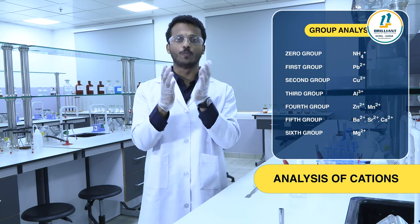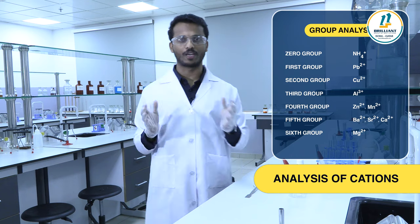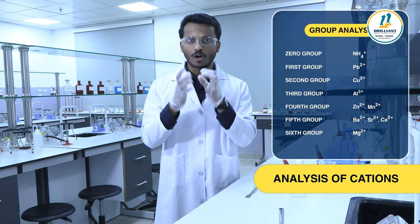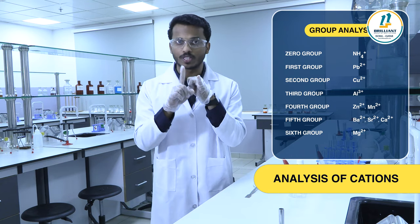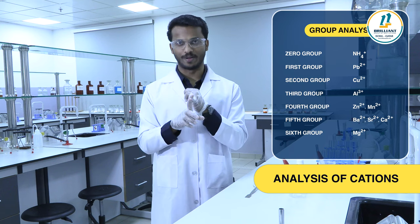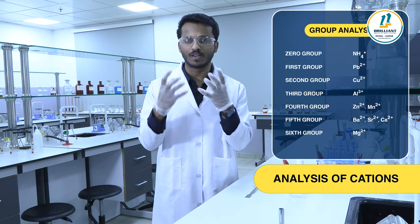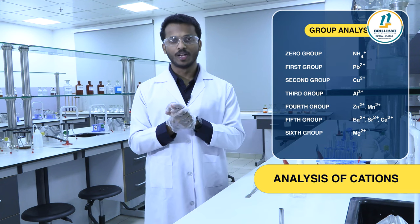Now we can go for the group calculation of the given cation, starting with group zero. Group zero may contain ammonium — the ammonium cation NH4+ belongs to group zero.